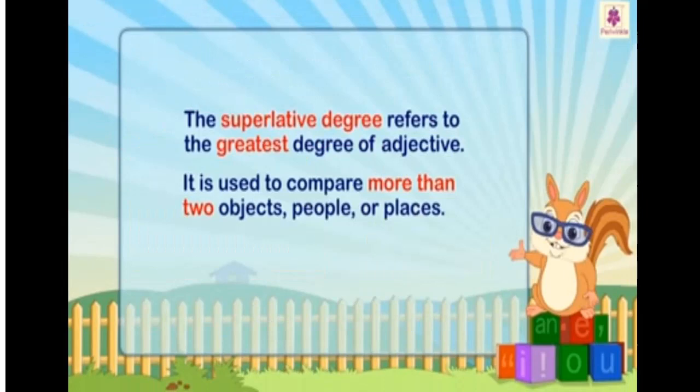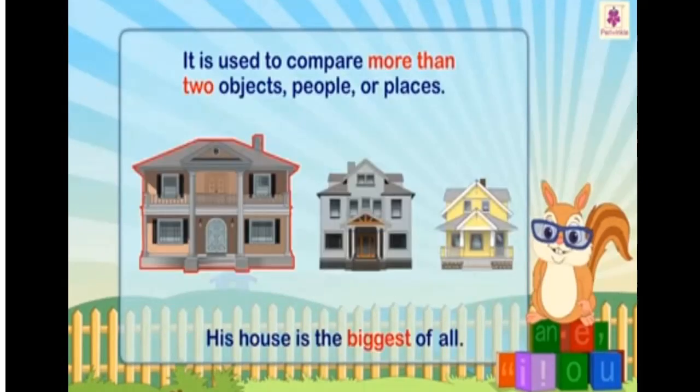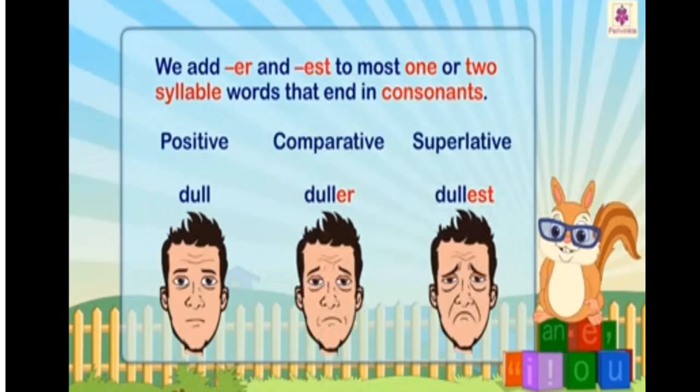The superlative degree refers to the greatest degree of the adjective. It is used to compare more than two objects, people, or places. For example, his house is the biggest of all. In order to form the comparative and superlative degree, we have to follow certain rules.